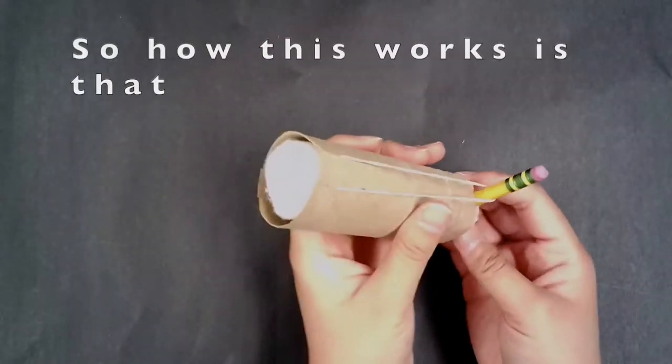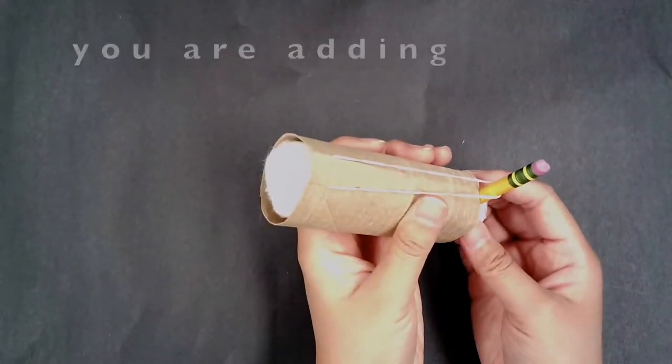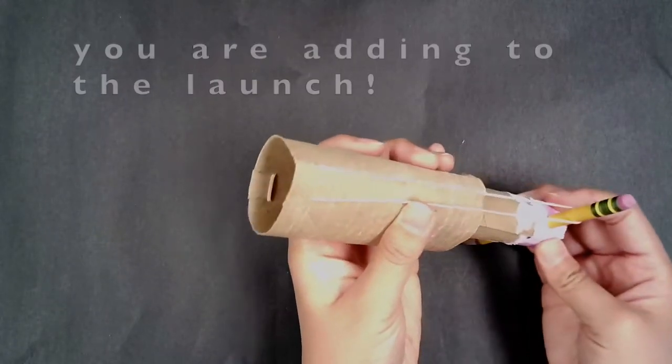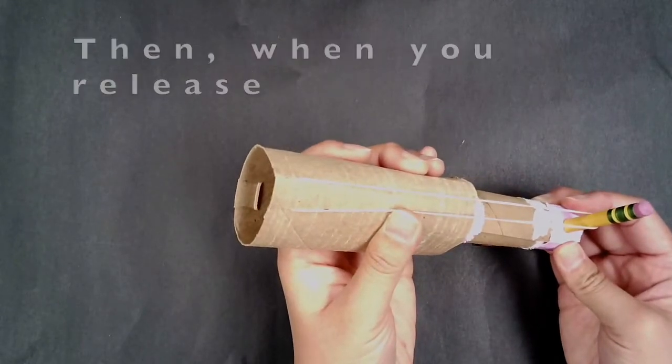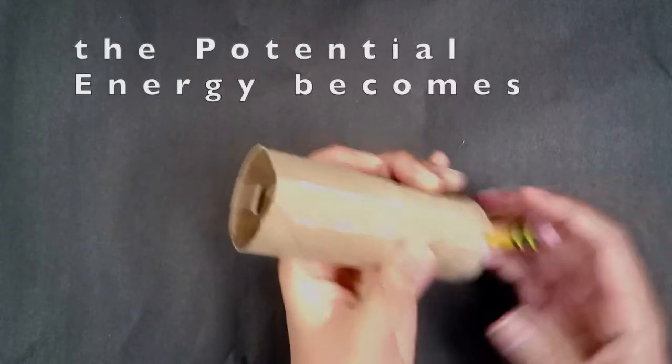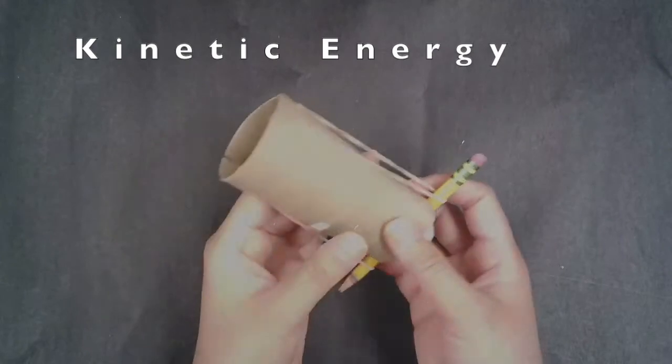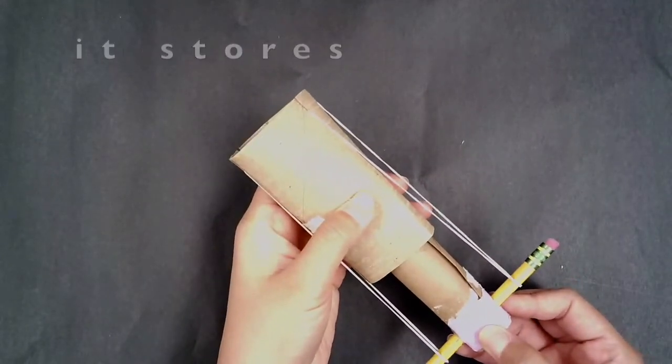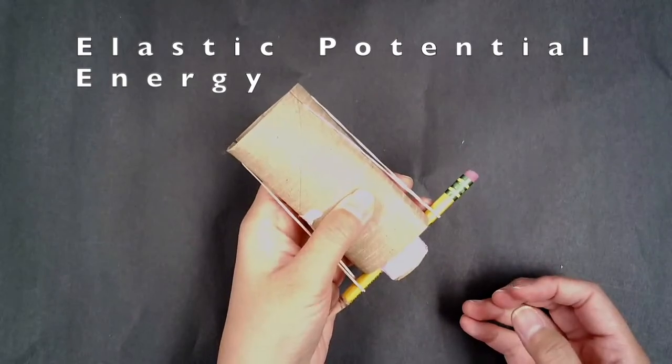So how this works is that when you pull back the pencil, you are adding potential energy. The farther you pull back, the more potential energy you are adding to the launch. Then when you release, the potential energy becomes kinetic energy. When you stretch the rubber bands, it stores elastic potential energy.